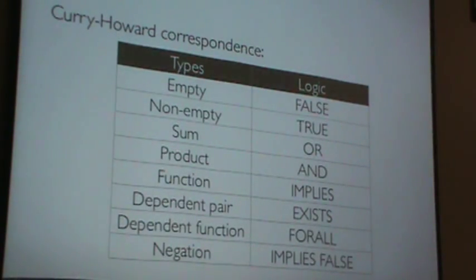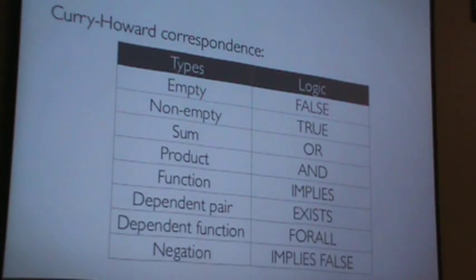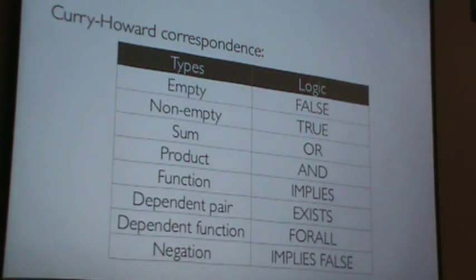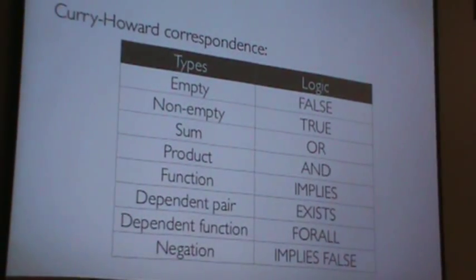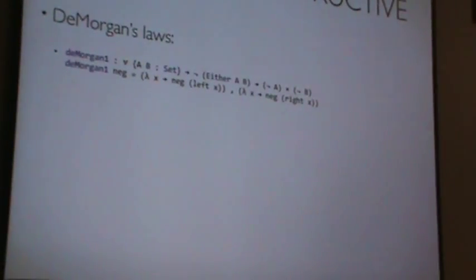Even in Haskell, there's something called Djinn in the Haskell channel, which will figure out proofs of simple logical statements phrased in terms of Haskell types. Now, constructive proofs — let's say, for example, we want to work with De Morgan's Laws, which pretty much everyone knows.